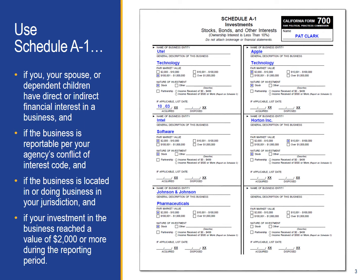Keep in mind that you are only required to report investments in businesses that are reportable per your agency's Conflict of Interest Code. Also, the business must be located in your agency's jurisdiction, doing business in your jurisdiction, planning to do business in your jurisdiction, or has done business in your jurisdiction during the previous two years. Finally, the investment must have reached a value of at least $2,000 during the reporting period to be reportable on the schedule.